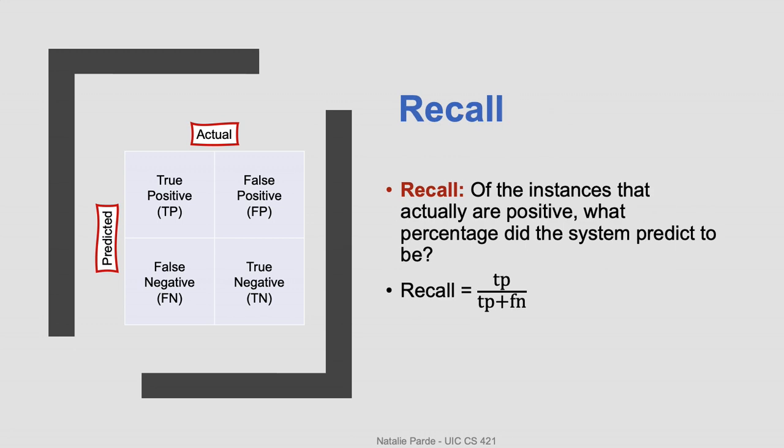Recall answers the question: of the instances that actually are positive, what percentage did the system predict to be? So it's basically looking at the ratio of the actually positive instances that were captured by taking the number of true positives divided by the sum of true positives and false negatives.